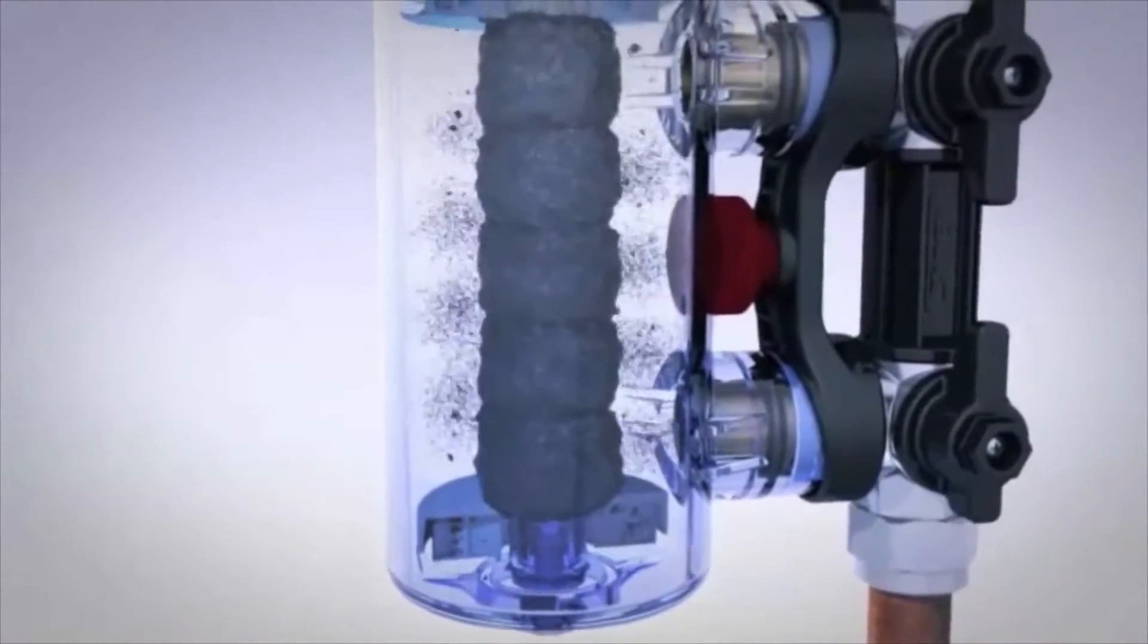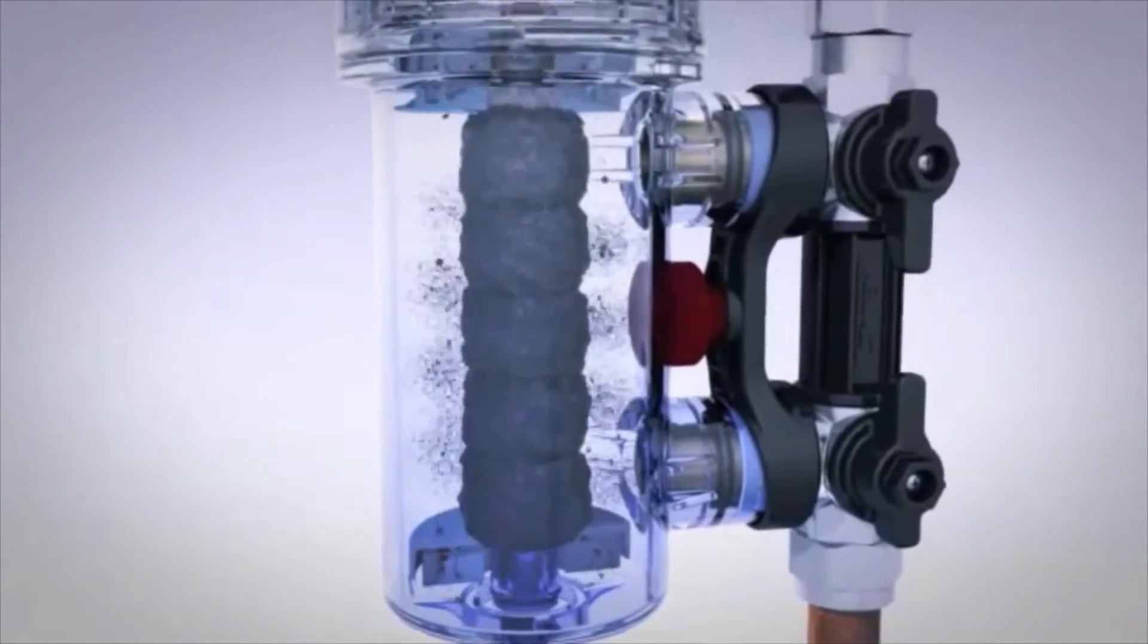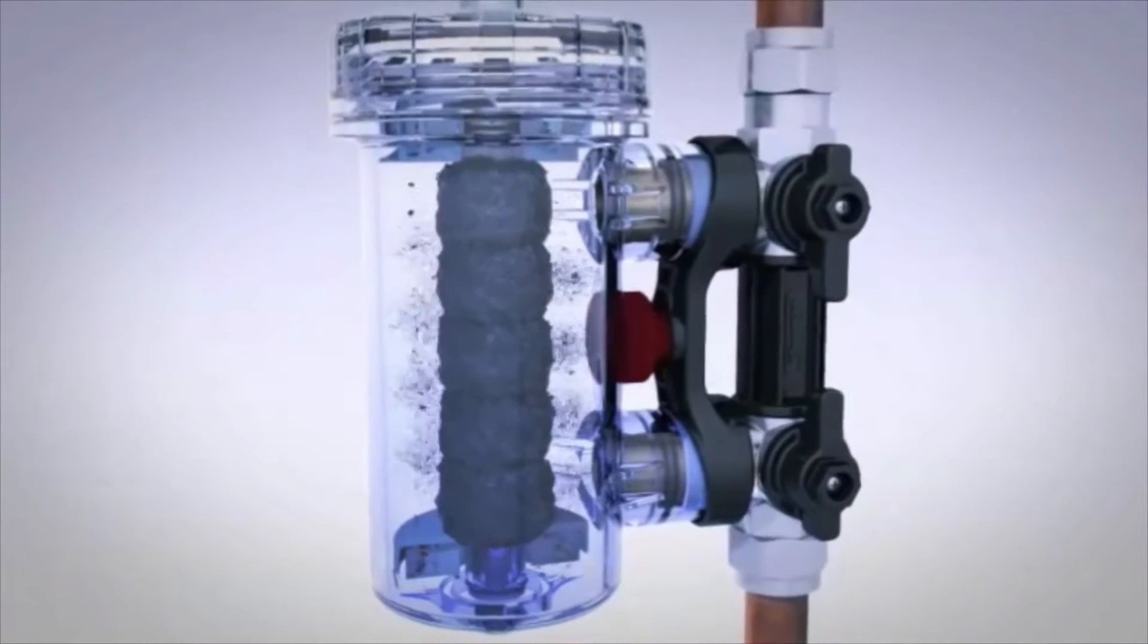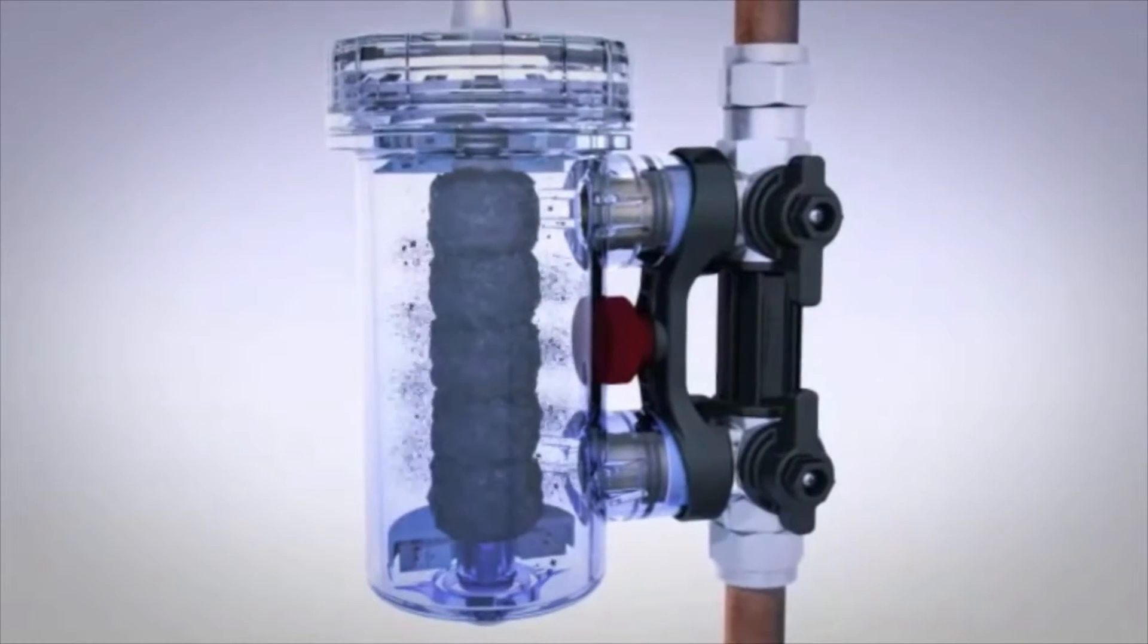As suspended debris enters the canister, magnetic debris is captured in the main chamber, while the two reverse flow zones trap and retain non-magnetic particles.